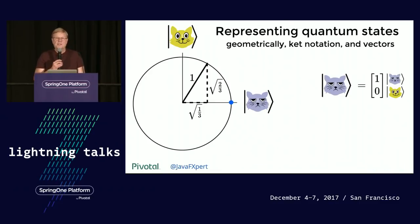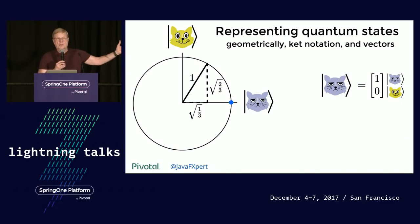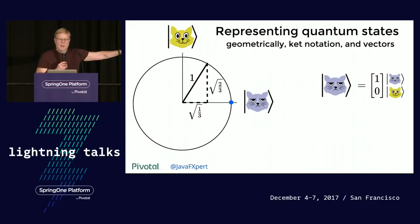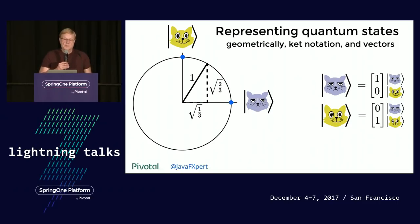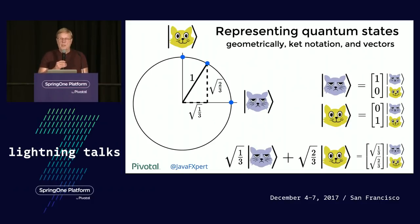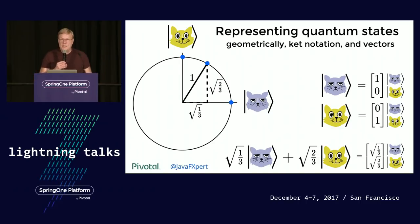We can represent these quantum states — these states of the cats — on a unit circle. Here we see grumpy cat as Cartesian coordinate (1, 0), represented as a vector. Happy cat is (0, 1), also represented as a vector. And then we can see a superposition: for example, the root of one-third grumpy and the root of two-thirds happy, and we represent that state as a vector. That's axiom one, the superposition principle.